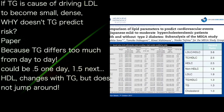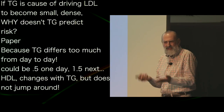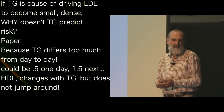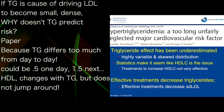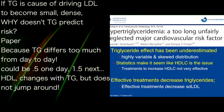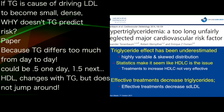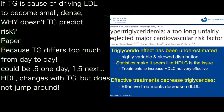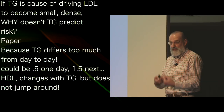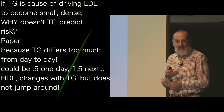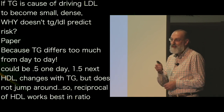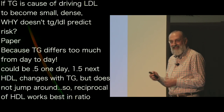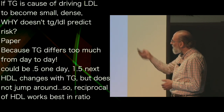These ratios somehow magically predict small dense LDL. Why doesn't the triglyceride level predict it as well, if triglycerides are the cause? This paper discusses that triglycerides are misunderstood and underestimated because they vary too much from day to day. Even in a patient whose triglyceride level is 0.5, it might be 1.0 the next day; someone at 1.5 might be 2.5 the next day. Something that changes with triglyceride but doesn't jump around is the HDL level — so HDL is actually a better measure of triglyceride than the triglyceride level itself. That's why the reciprocal of HDL works.